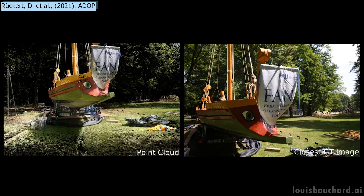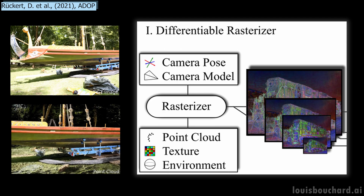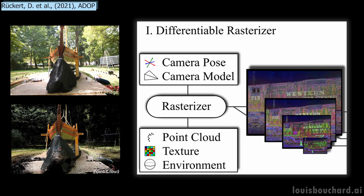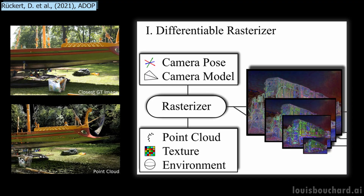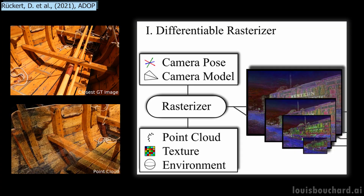You will take your images and point cloud and send them to the first module: the rasterizer. The point cloud is basically our initial 3D reconstruction, or our first draft. The rasterizer will produce the first low-quality version of our 3D image using the camera parameters from your pictures and the point cloud. It will basically try to fill in the holes in your initial point cloud representation, approximating colors and understanding depth. This is a very challenging task, as it has to both understand the images that do not cover all the angles and the sparse point cloud 3D representation.